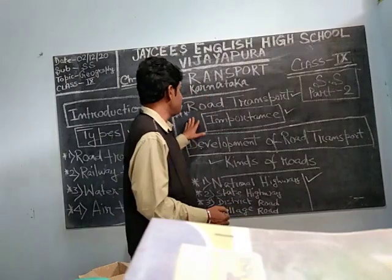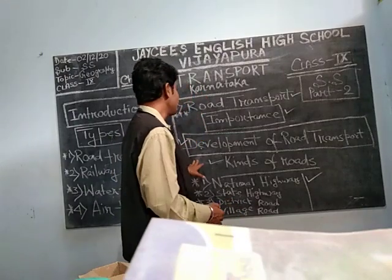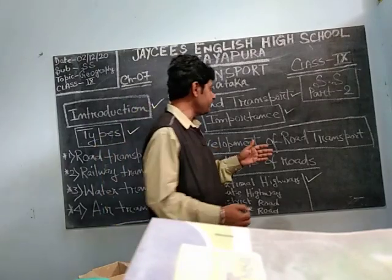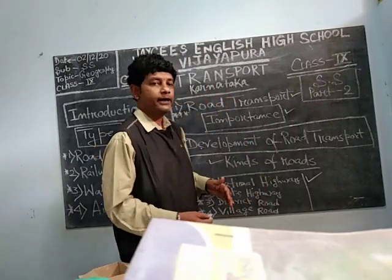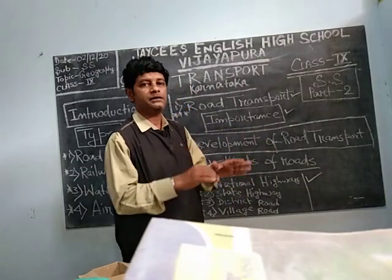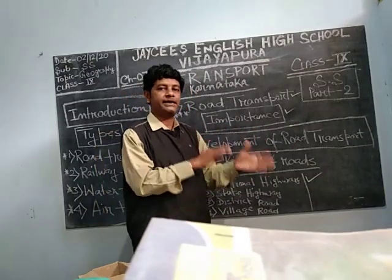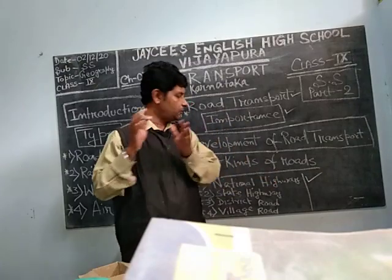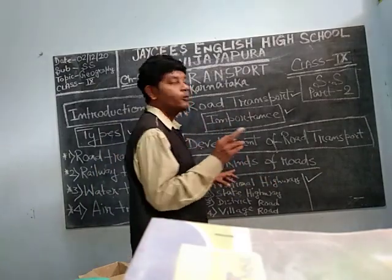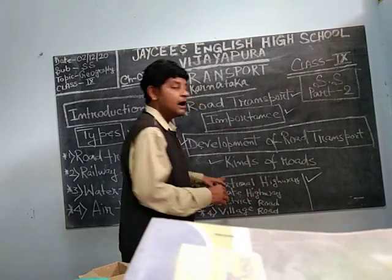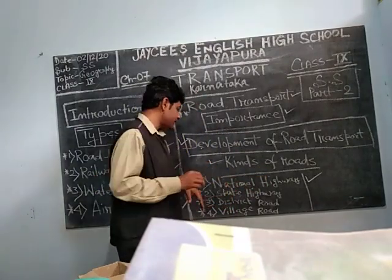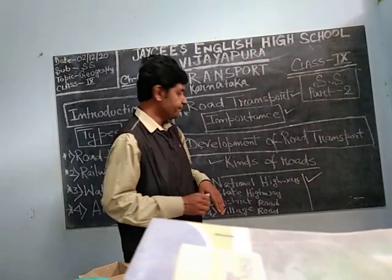We already learnt about the importance and development of road transport — before independence and after independence — how kings and emperors used roads, and how roads changed from unmetalled roads to metal roads. Now we are in the kinds of road. What are the kinds of road? National highway, state highway, district road, and village road. Now one by one we will go.